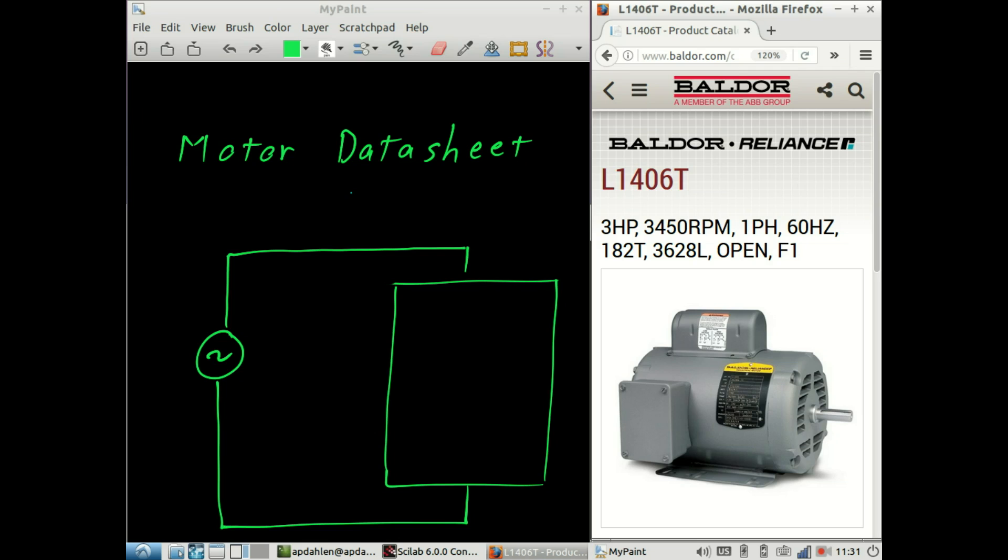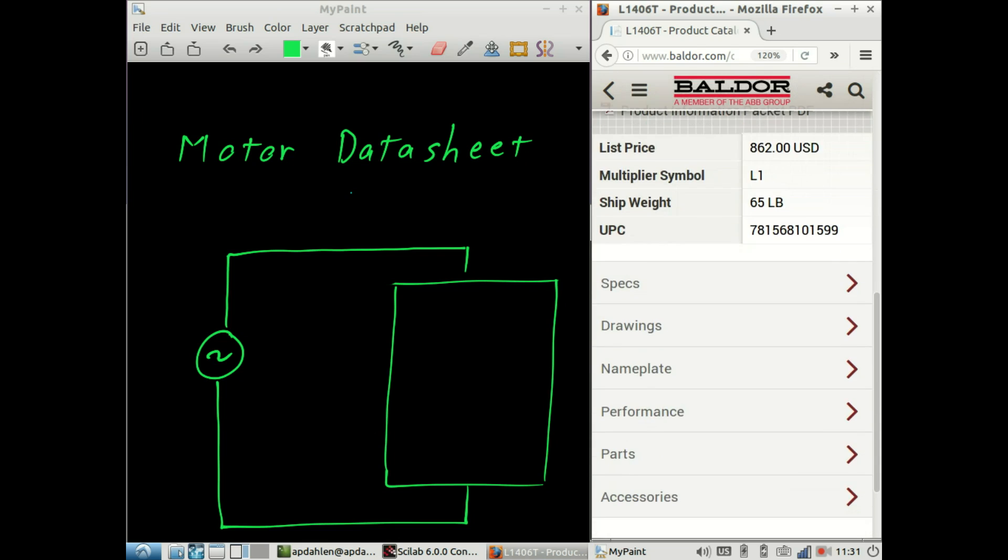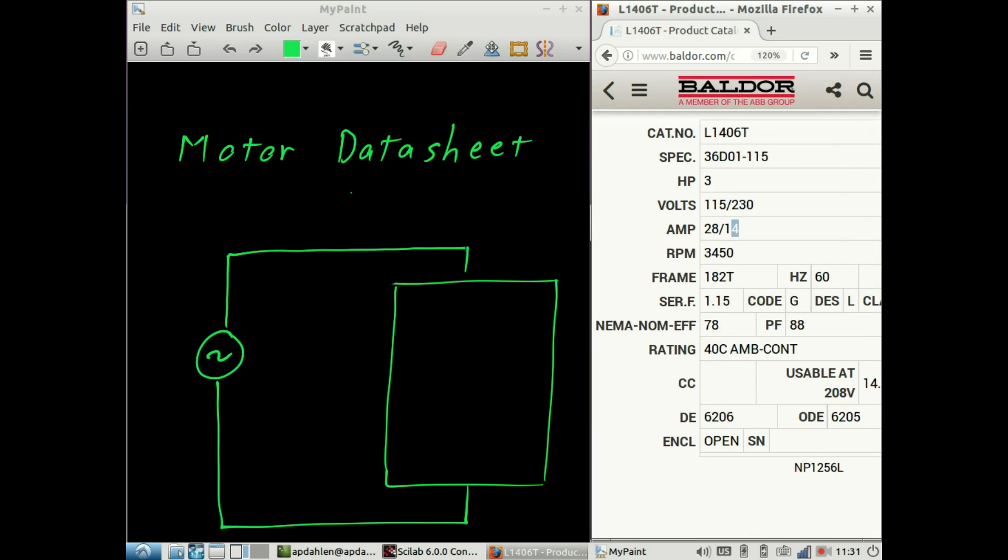It's a 3 horsepower motor, and if we look at the nameplate data, we'll see that it can be wired to run on 115 or 230 volts. And this is in America, so it's a 60 hertz machine.